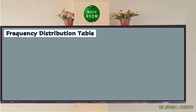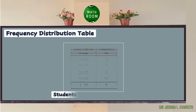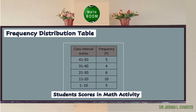A frequency distribution of these groups serves as a convenient means of summarizing or analyzing the data. In calculating the measures of position for grouped data, understanding the frequency distribution table will be a great help. Frequency tells you how often something happened. The given frequency table shows the number of students who got the following scores in a mathematics activity. By observation, we can conclude that there are 5 students who got a score from 1 to 10, and 10 students from 11 to 20.